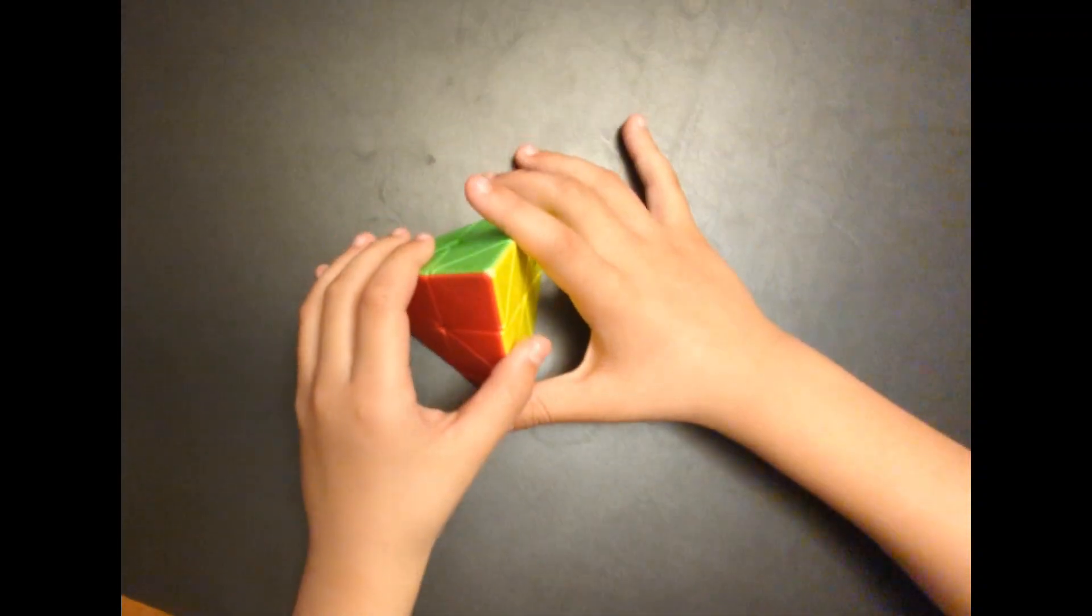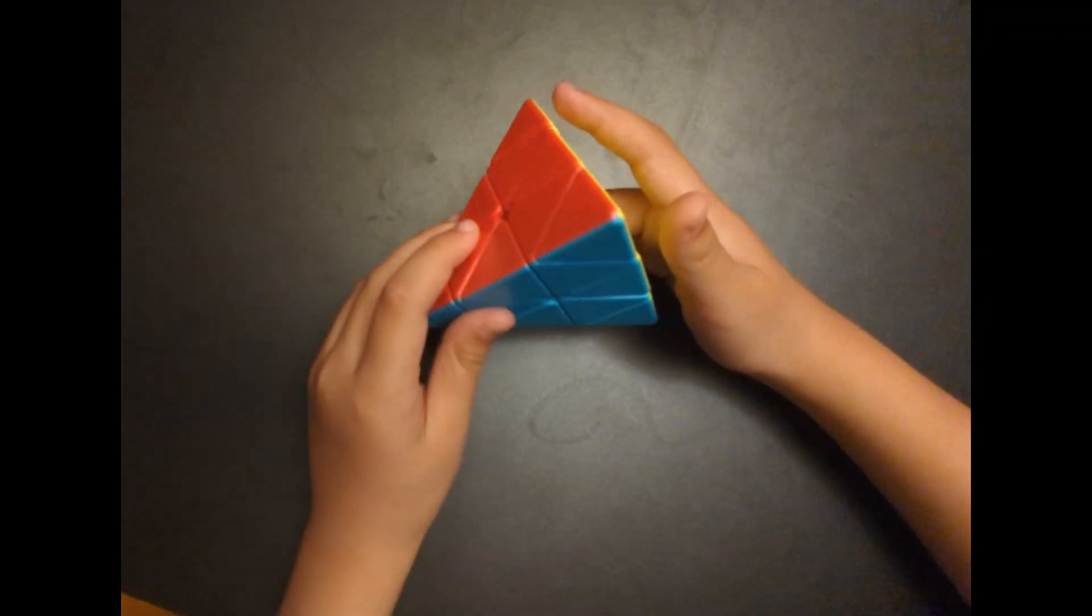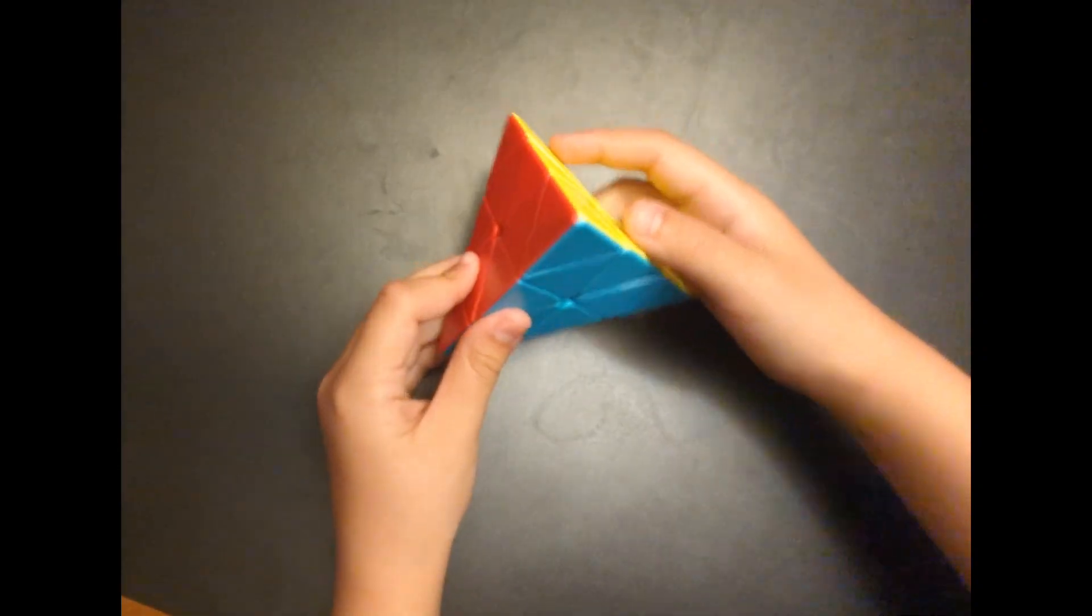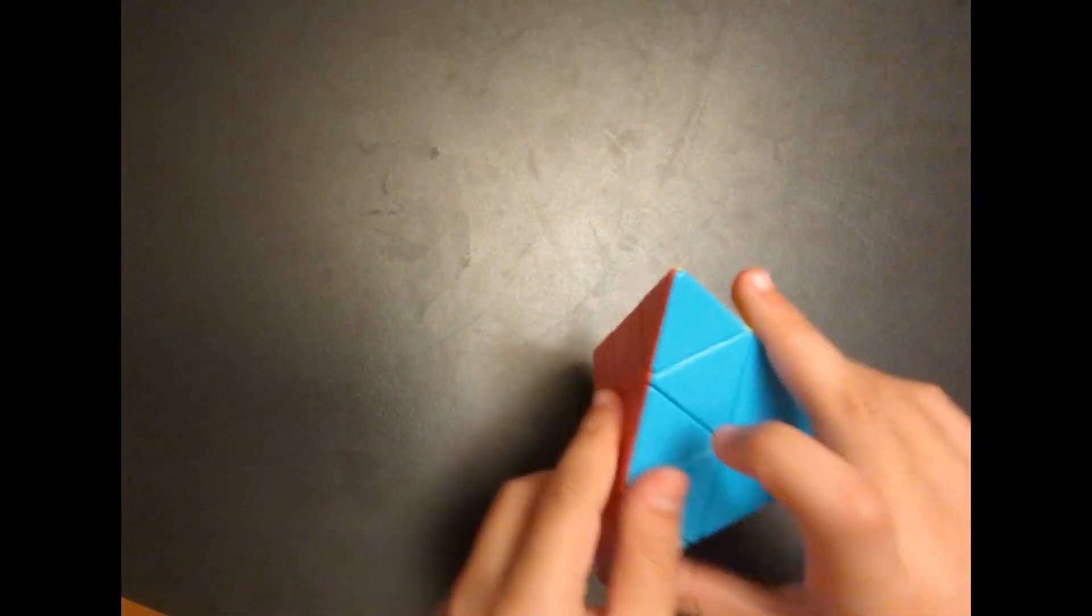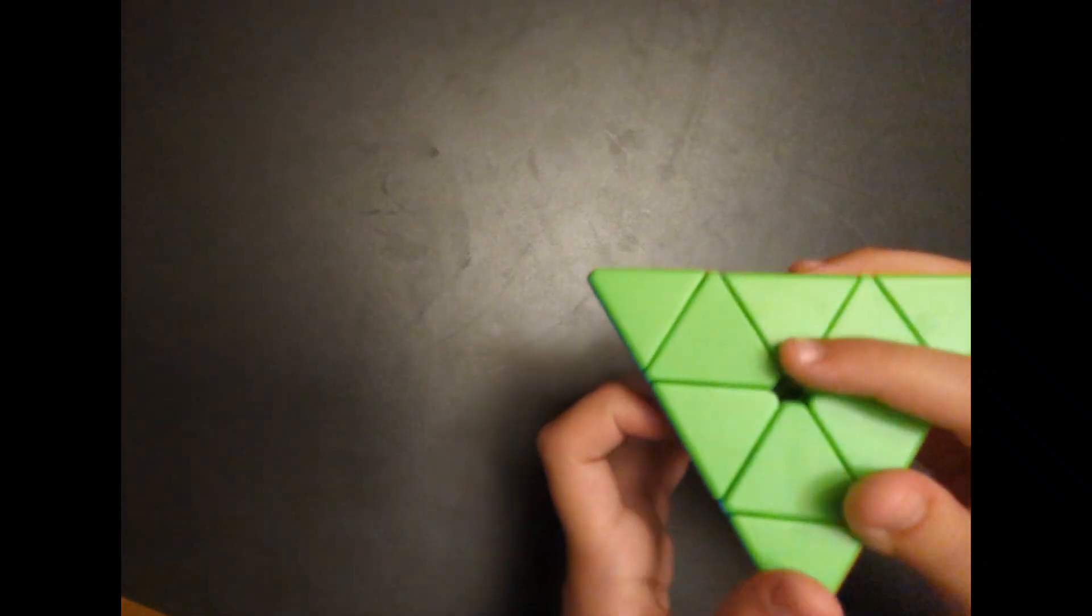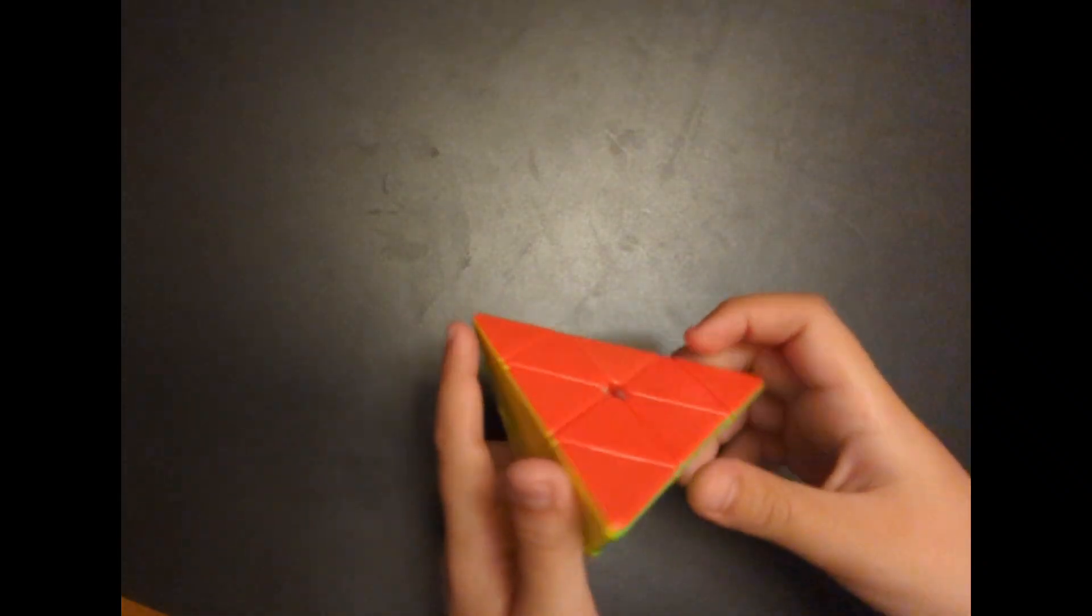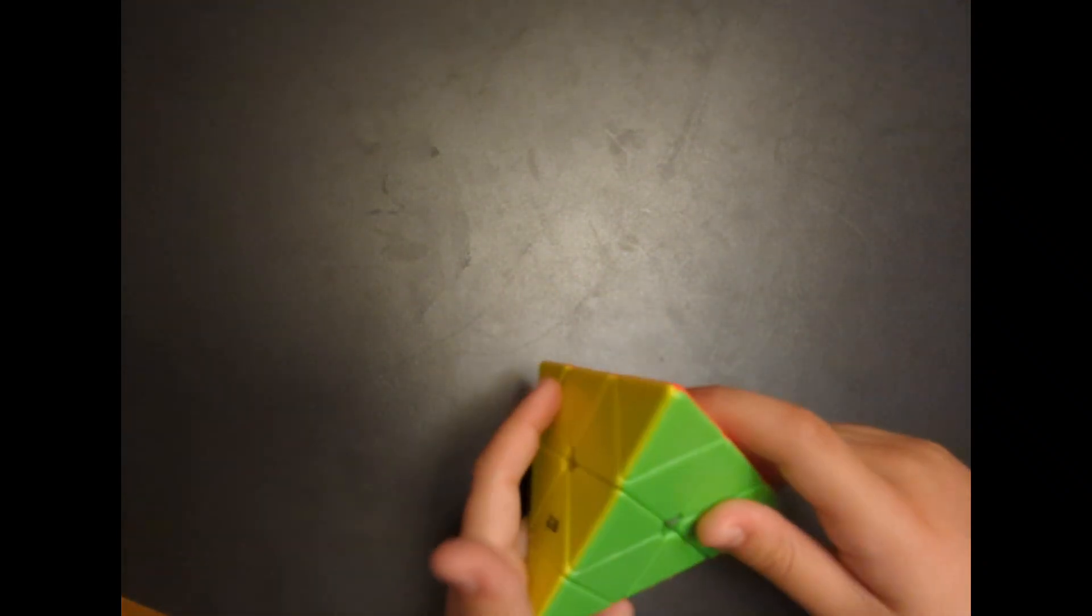Today I will be showing you how to solve a Pyraminx. As you see, this is a Pyraminx. It has blue, red, yellow, and green. And that's just about all the colors it has.